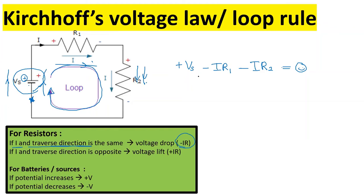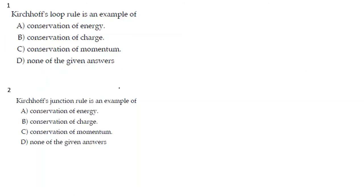Now let's go to the actual worksheet. Here are two conceptual problems. Kirchhoff's loop rule is the voltage rule, and voltage is based on potential energy — so it is conservation of energy. The junction rule is the current rule; current is associated with charge, therefore it is conservation of charge.